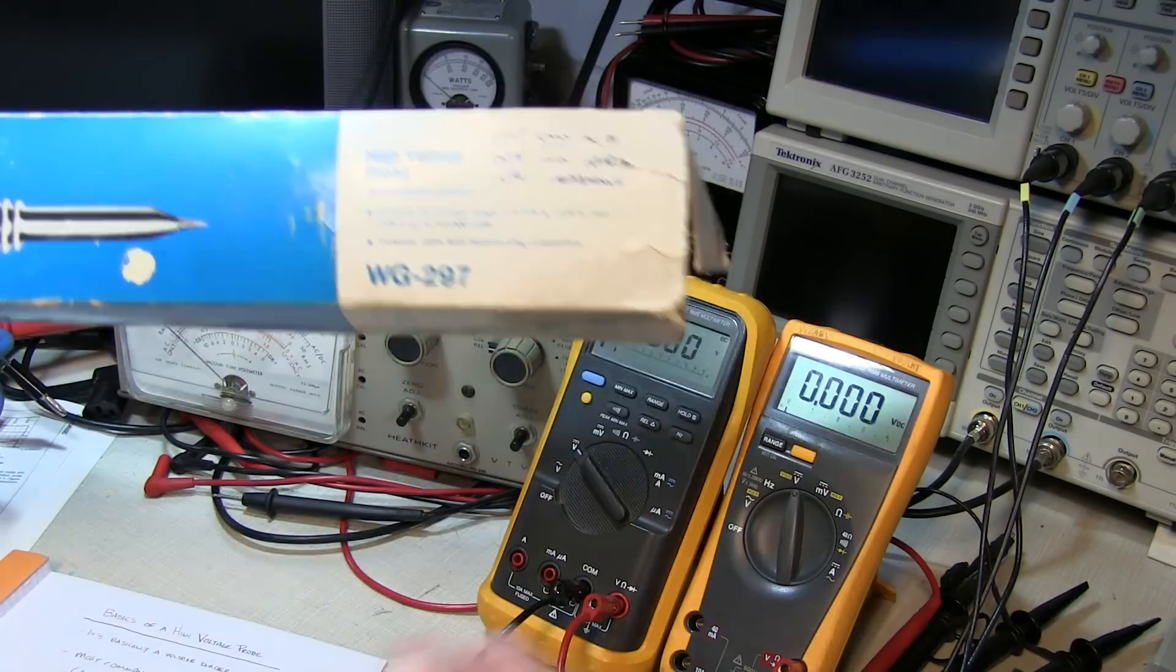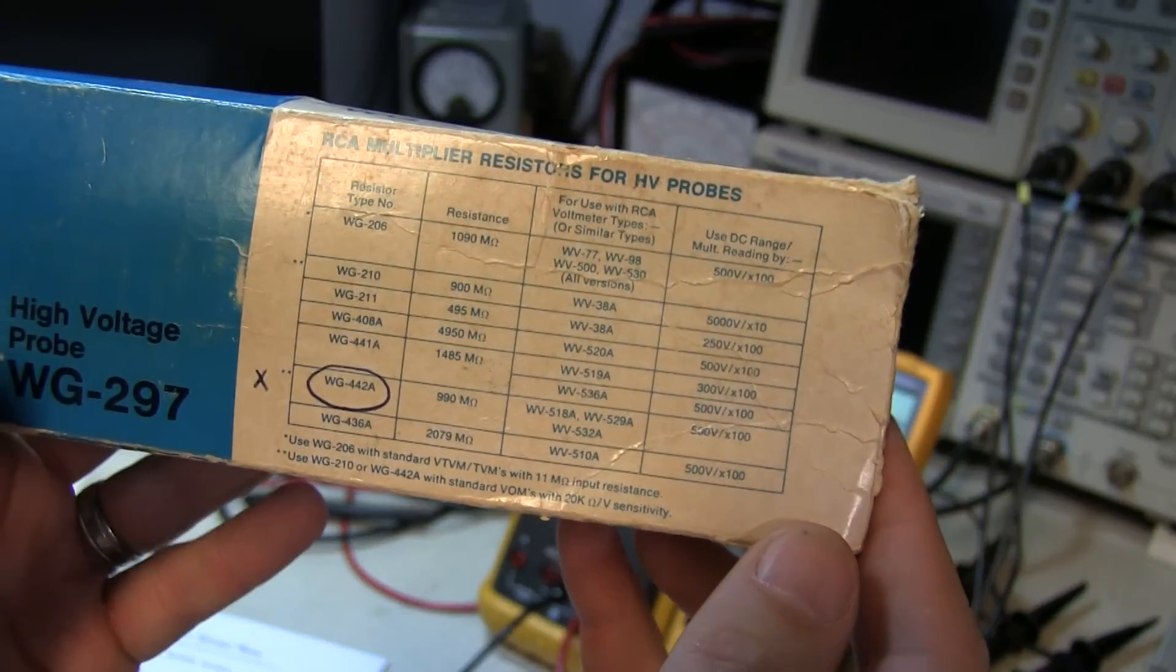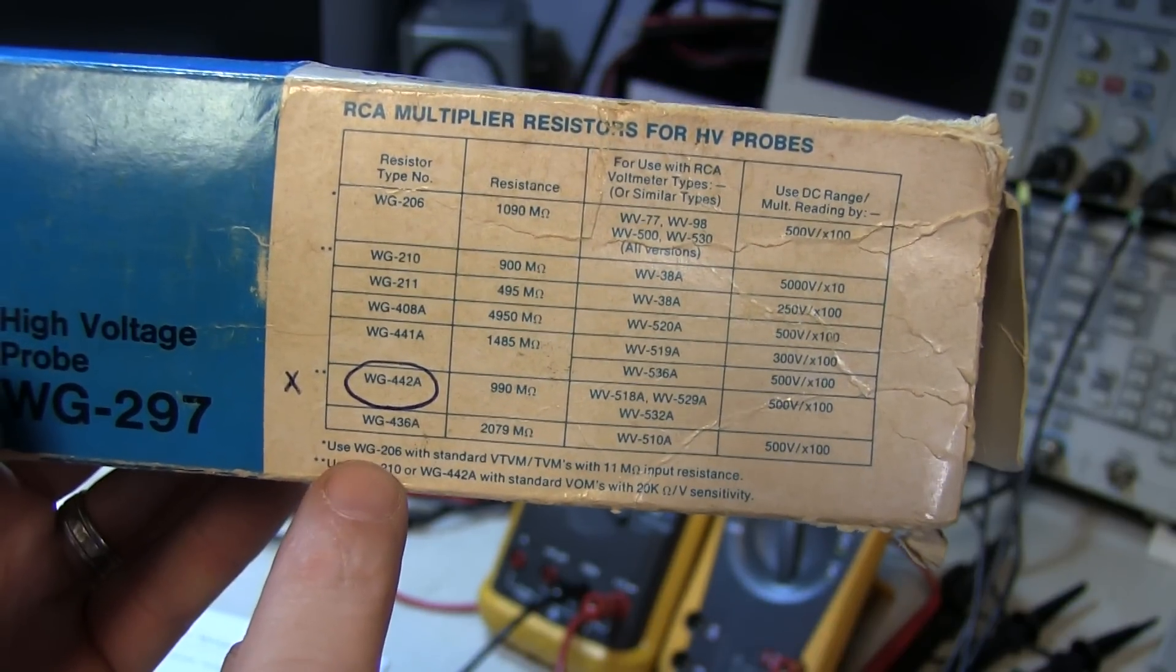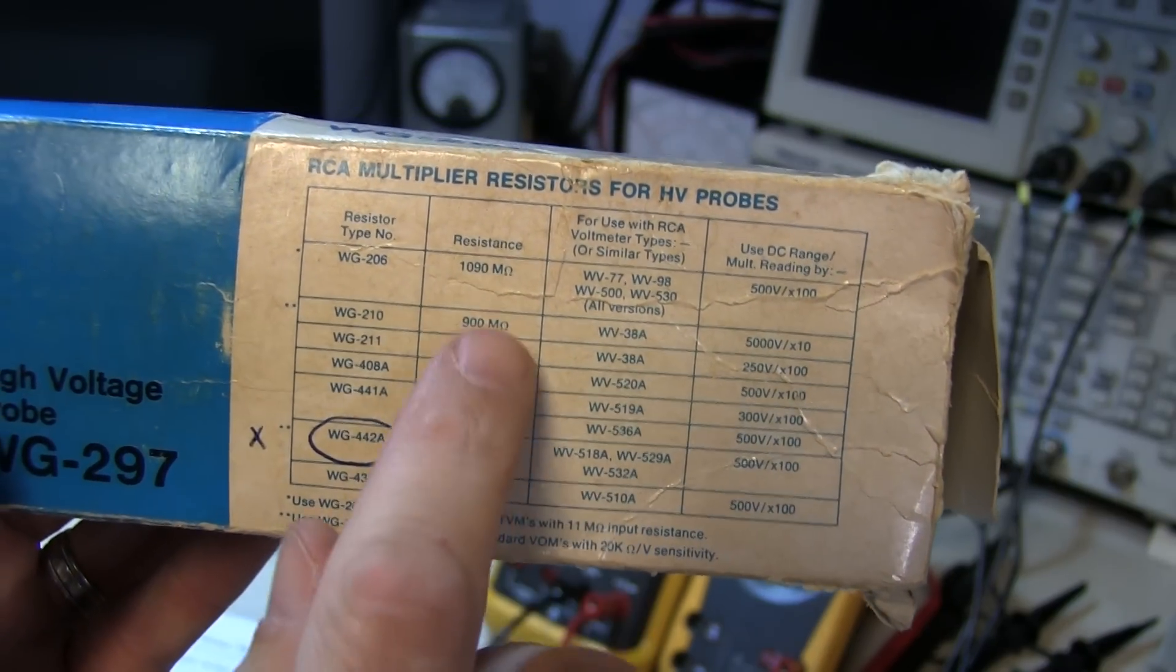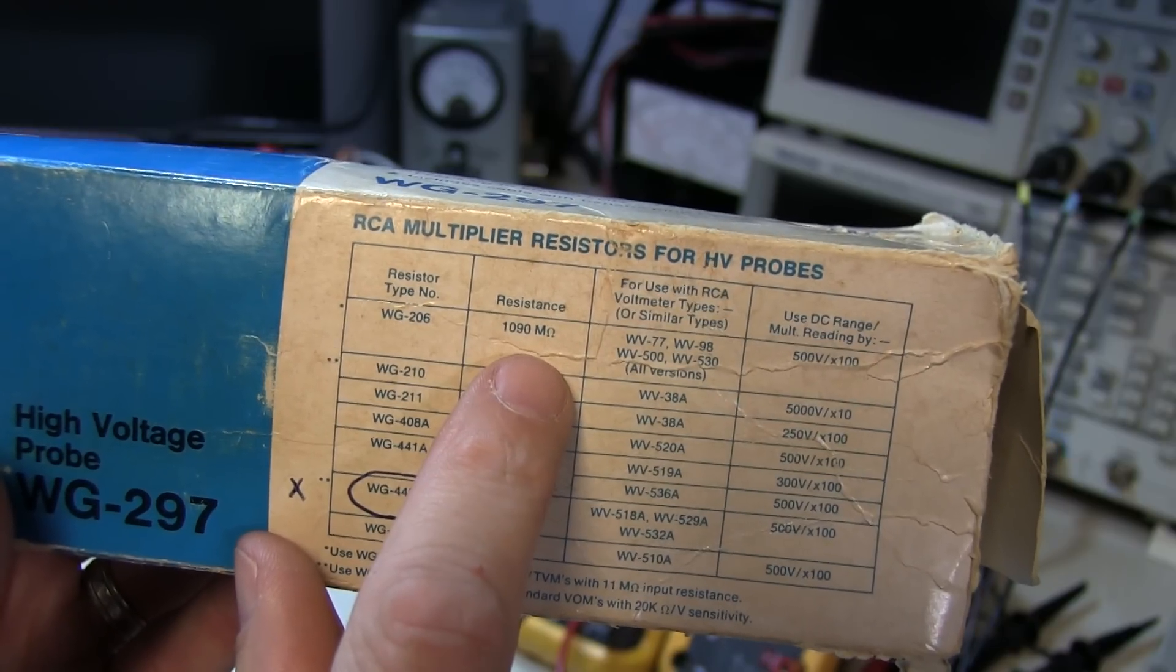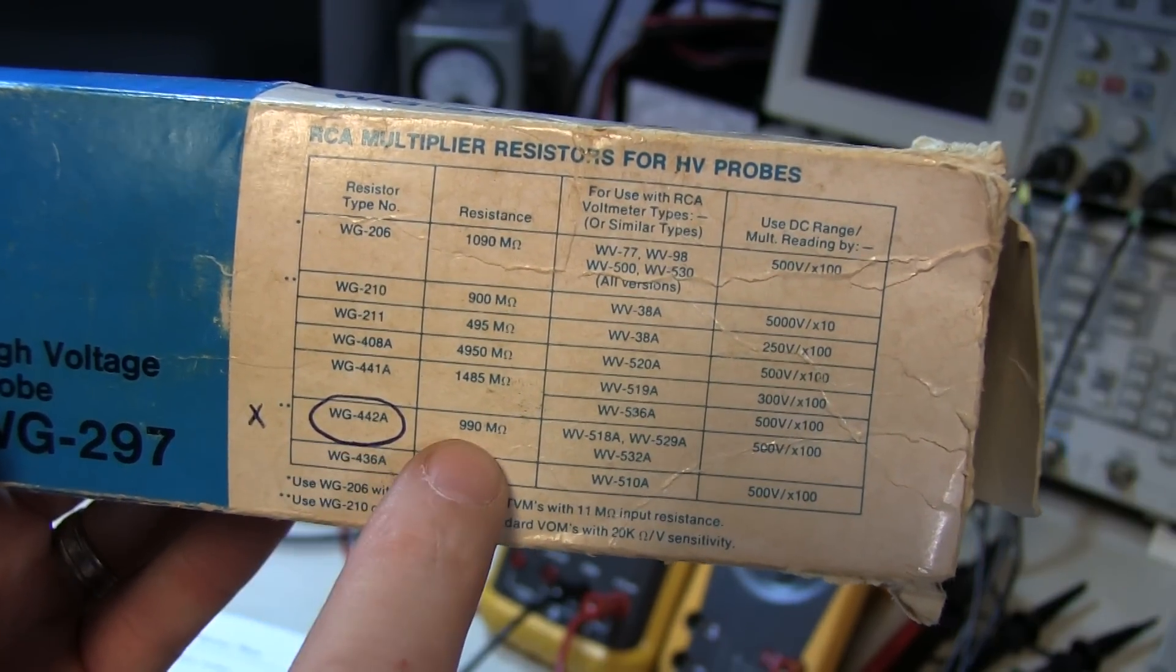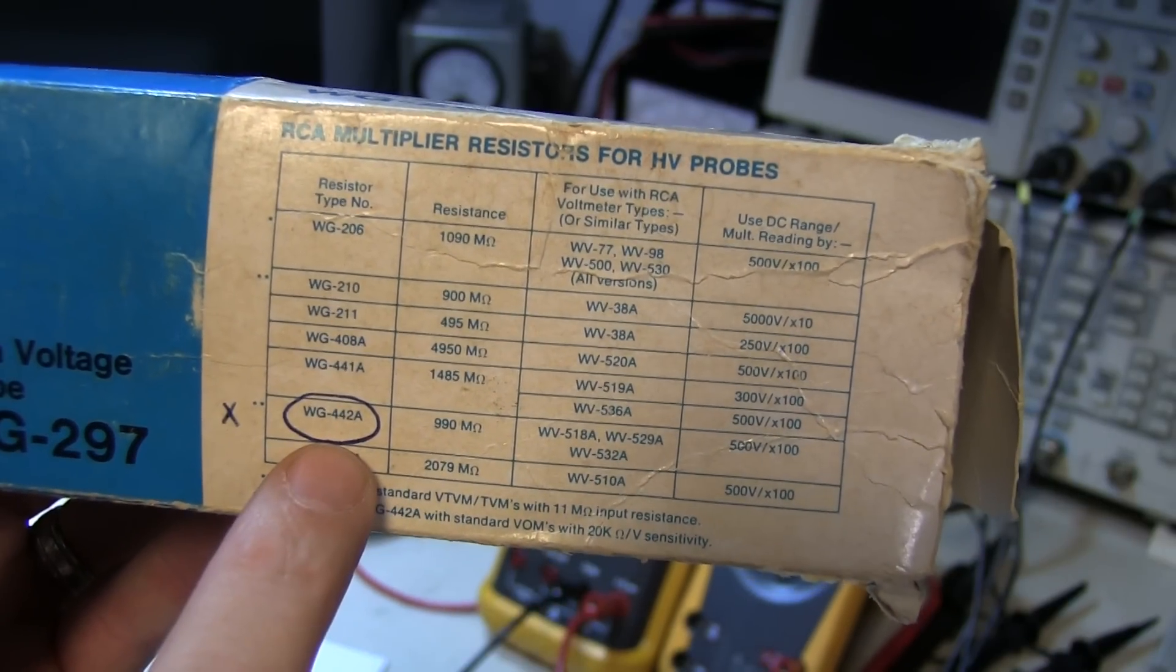If we look at this box again for the probe we've been looking at, there's actually a table of different resistors that were available for this particular probe. There's even a note here that says you use the WG206 with standard vacuum tube volt meters with an 11 mega ohm input resistance. And we can see that particular resistor was 1090 mega ohms. That in series with an 11 mega ohm input resistor would give you the 100x divide ratio. The resistor I've got in this probe is the WG442A, which is 990 mega ohms, typically for use with your typical 10 mega ohm input impedance devices.